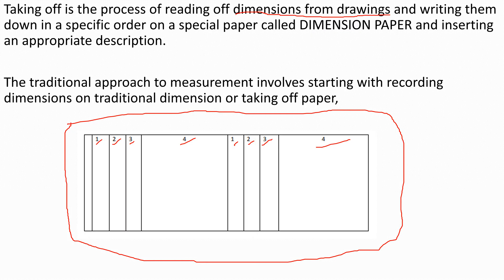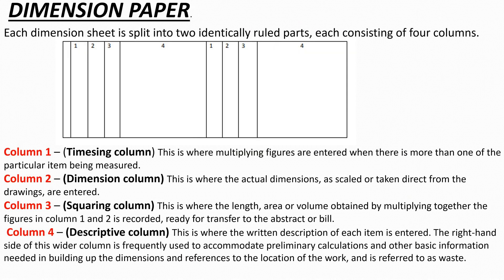When entering dimensions, you are supposed to follow a specific order, and I'm going to explain that today. The traditional approach to measurements involves recording dimensions on traditional dimension or taking-off paper. In the dimension paper, you may be asking what these four columns are for. The first column is called the timesing column — this is where multiplying figures are entered when there is more than one particular item being measured.